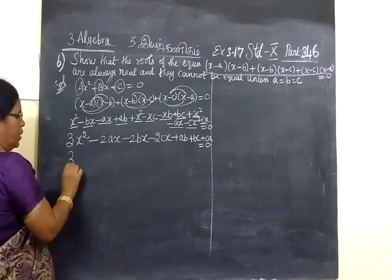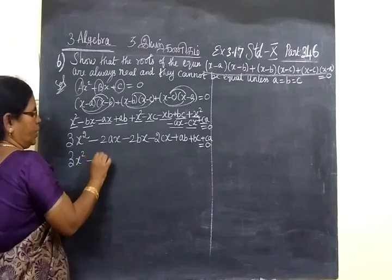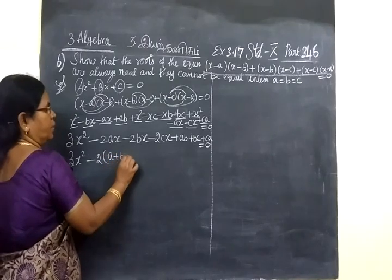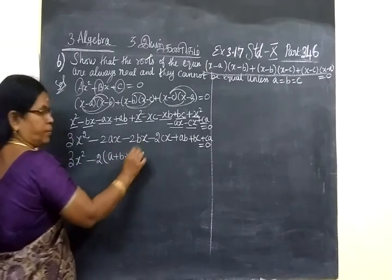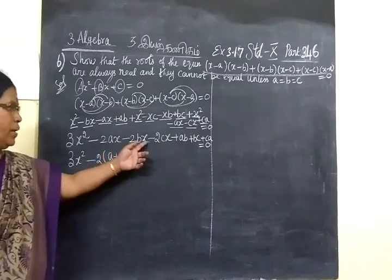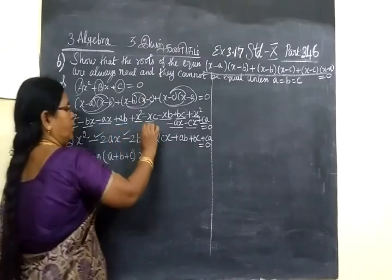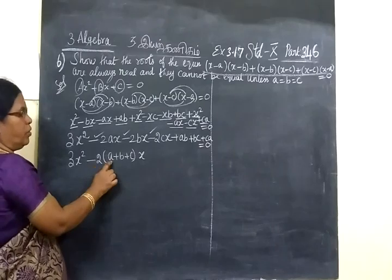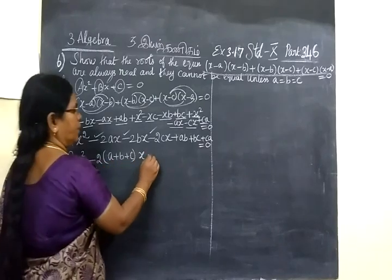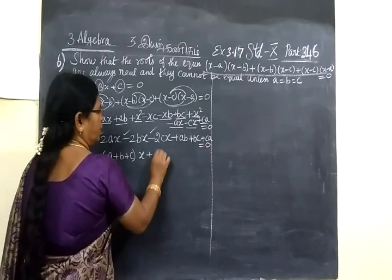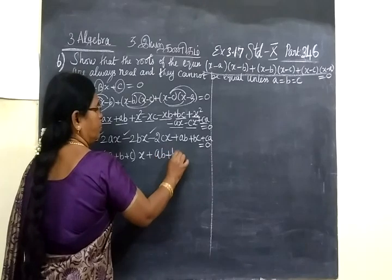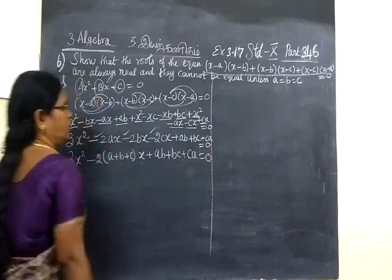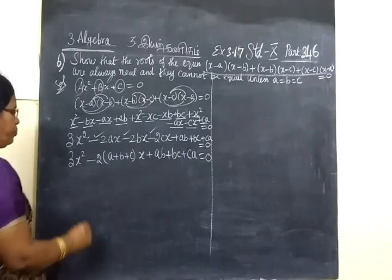So we have 3x², then take minus 2 common from the x terms giving minus 2(a plus b plus c)x, then the constant terms ab plus bc plus ca, all equal to 0.